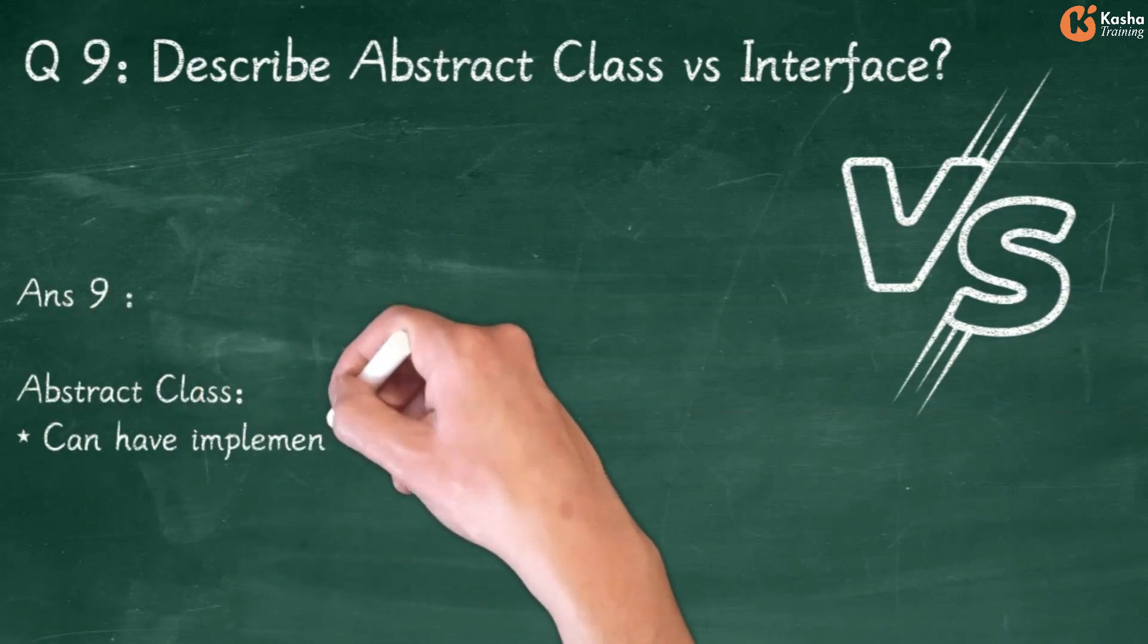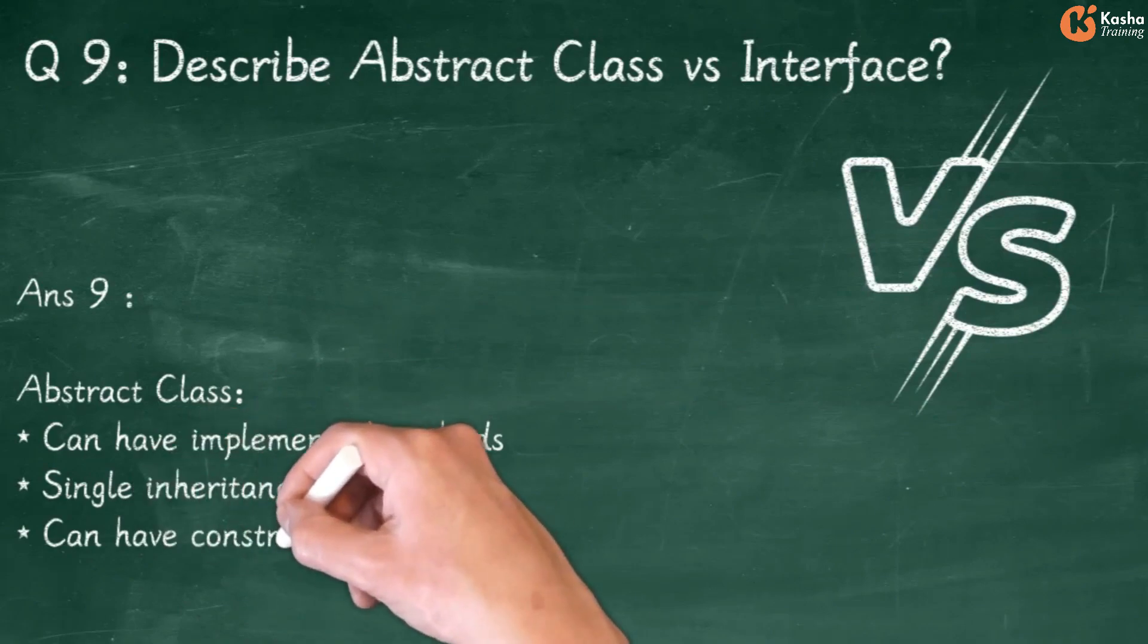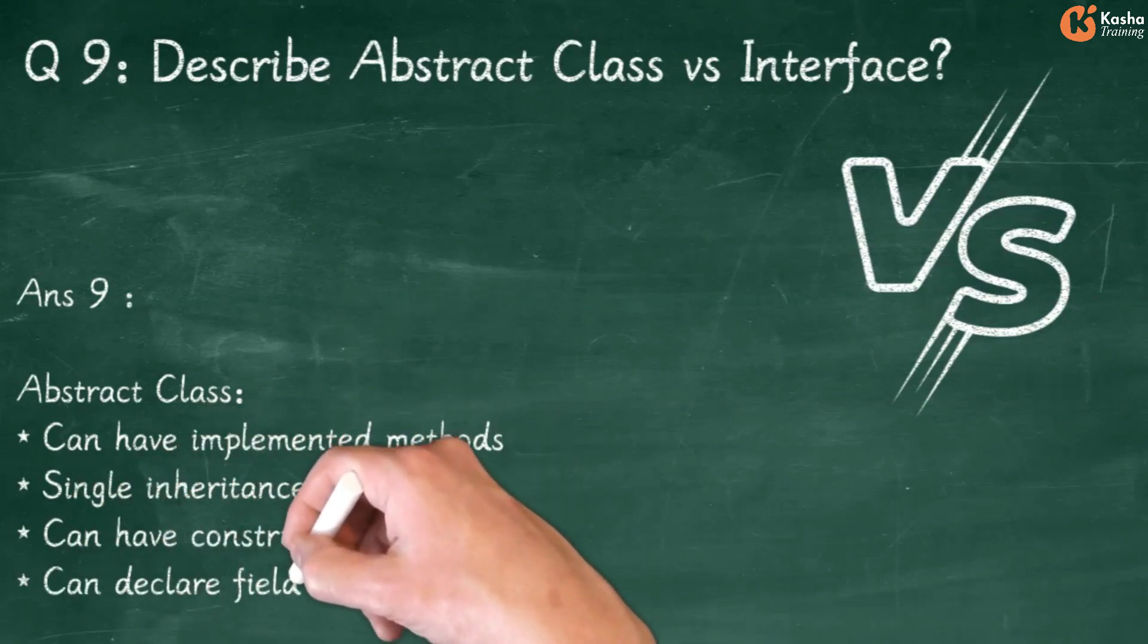Answer 9: Abstract Class can have implemented methods, supports Single Inheritance, can have constructors, and can declare fields.